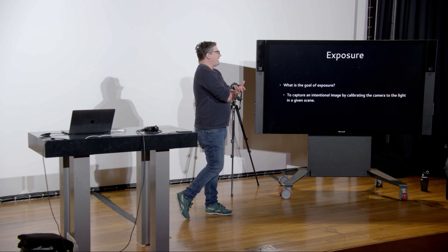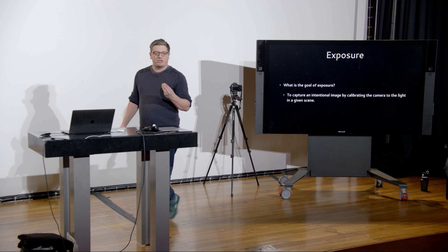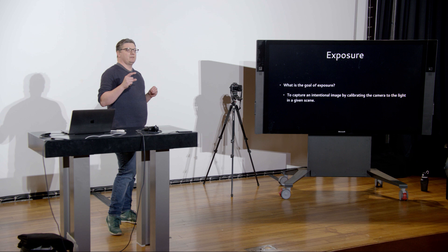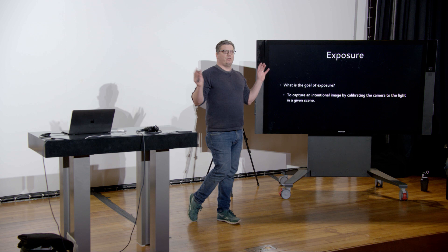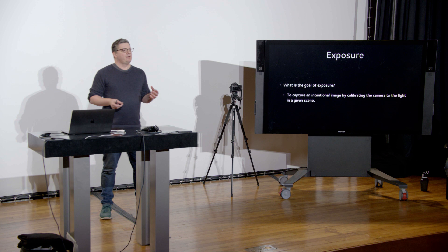Our goal with exposing an image is really to capture that intentional image — to make a decision about how we want an image to look before we press the shutter button. When you have a camera on auto mode, you're basically giving up all the decision-making to a small machine. They're sophisticated, sure, but they're not intelligent. Our goal, as intelligent operators, is to make the decisions for the camera, or at least override decisions that may be poor.